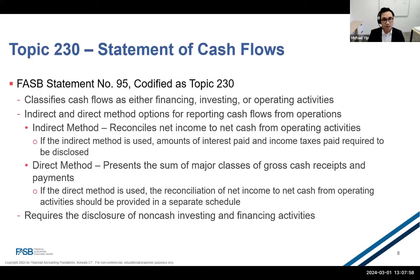Topic 230 allows entities to present their statement of cash flows using either the indirect or the direct method. The indirect method starts with net income and adds back non-cash charges such as depreciation and amortization, as well as changes in current assets and current liabilities, which should reconcile back with net cash flows from operating activities. The direct method starts with presenting gross cash receipts and payments from items such as cash received from customers, cash paid to suppliers and employees, interest received and paid, and income taxes paid to provide net cash flows from operating activities. If the indirect method is used, the entity shall also disclose cash paid for interest and income taxes.